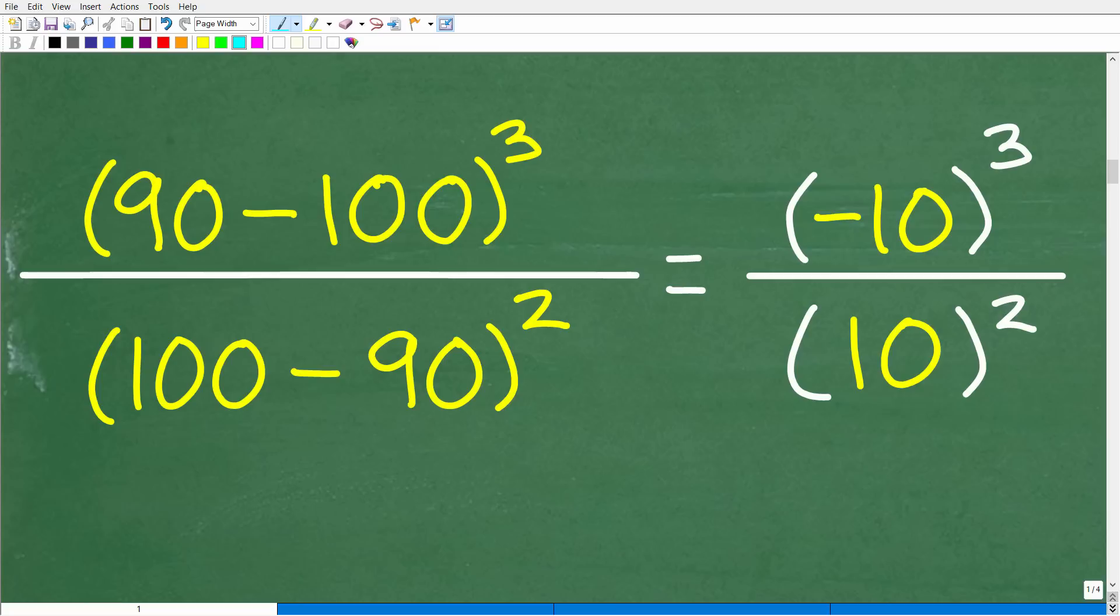So here, 90 minus 100, this right here, when we do this inside parentheses, this is negative 10. Negative 10, not 10. So if you put that down as 10, then you need to do some review with your positive and negative numbers. It's not that difficult to learn, but at least you know where you made an error.